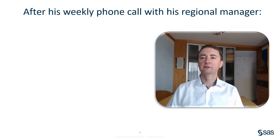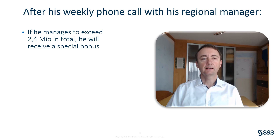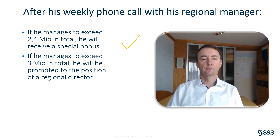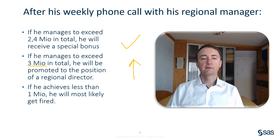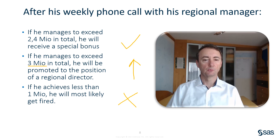After his weekly phone call with his regional manager, he receives the following information. If he manages to exceed 2.4 million in total, he will receive a special bonus. If he even manages to exceed the 3 million threshold, he will be promoted to the position of regional director. If, however, he achieves less than 1 million, then he will most likely get fired, because this is not what regional management expects from their local sales managers. So this is the situation where the sales manager finds himself at the moment.